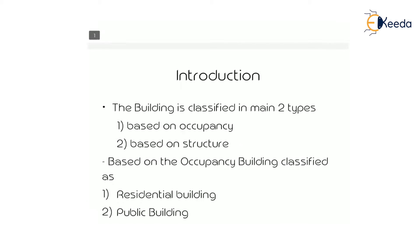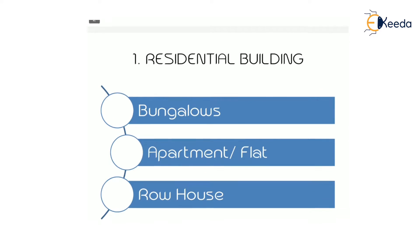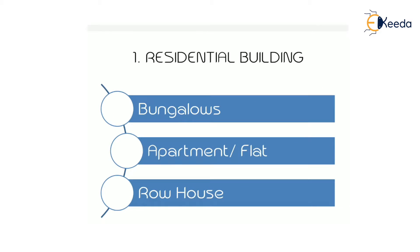Introduction: a building is classified into two main types — first, based on occupancy, and second, based on structure. Based on occupancy, buildings are classified as residential buildings and public buildings. A building used for residential purpose is called a residential building; a building used for public purpose is called a public building.